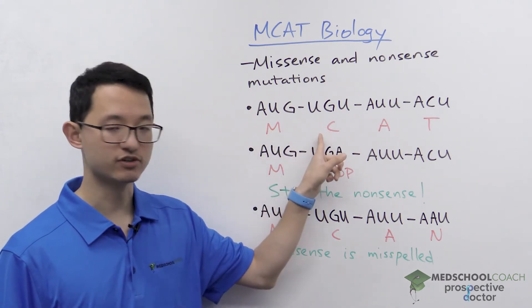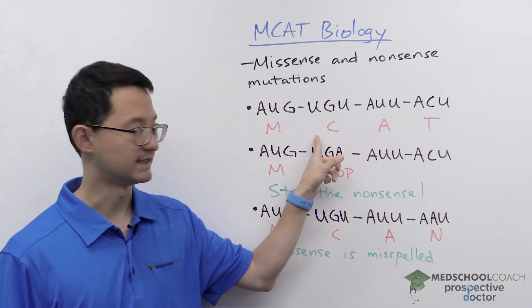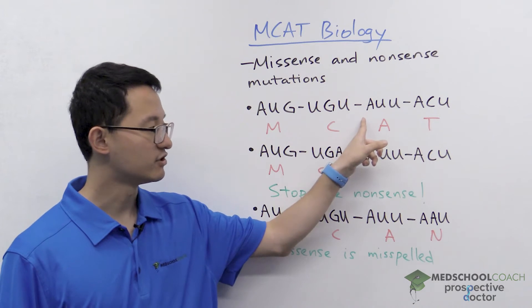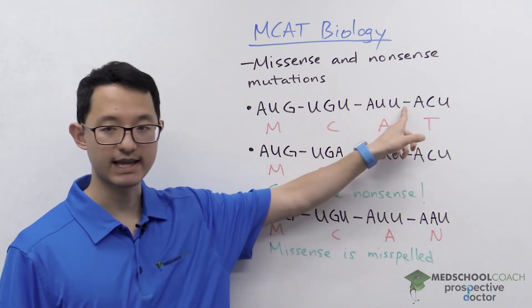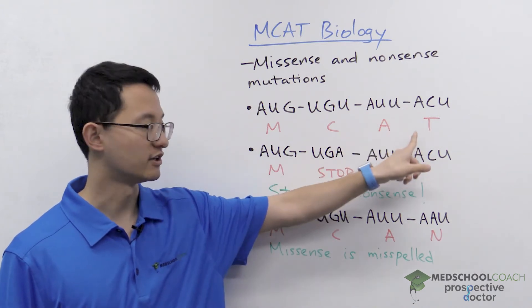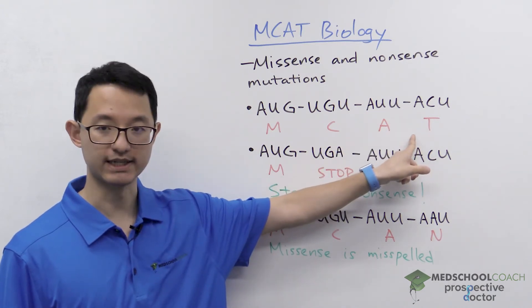UGU encodes for cysteine, AUU encodes for alanine, and ACU encodes threonine.